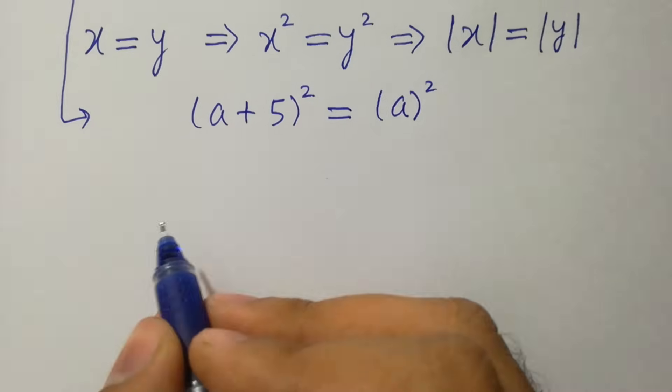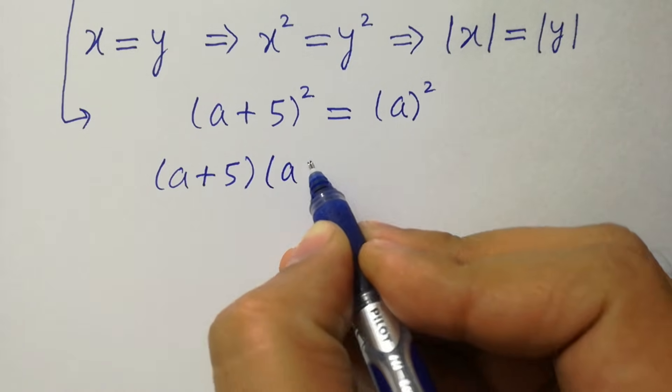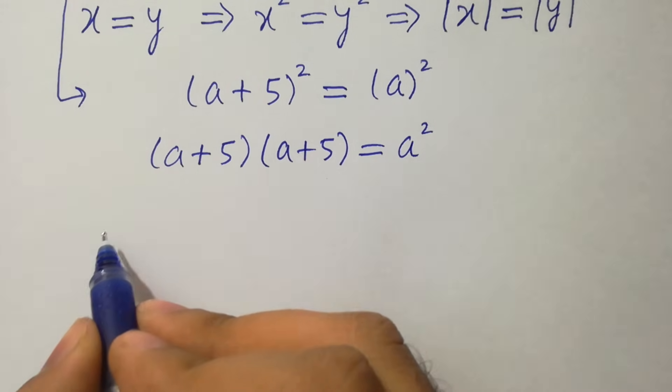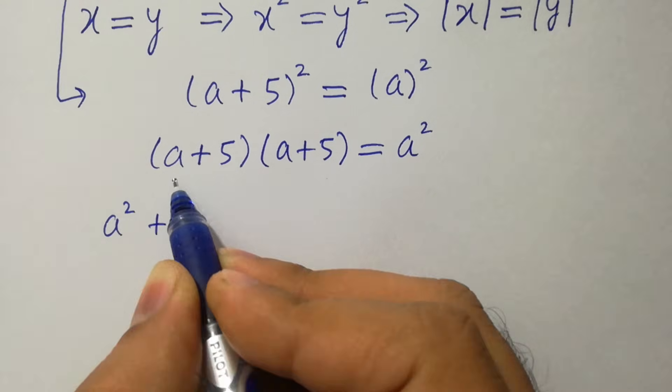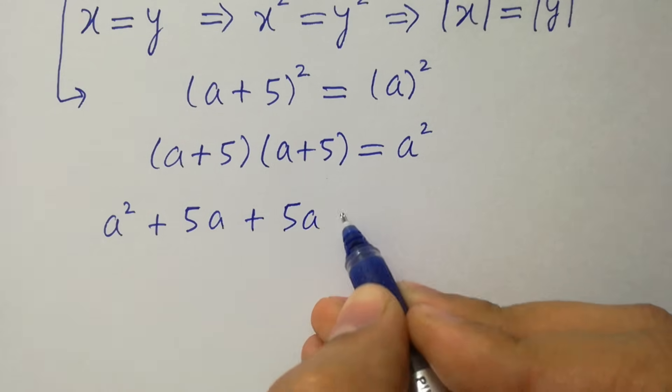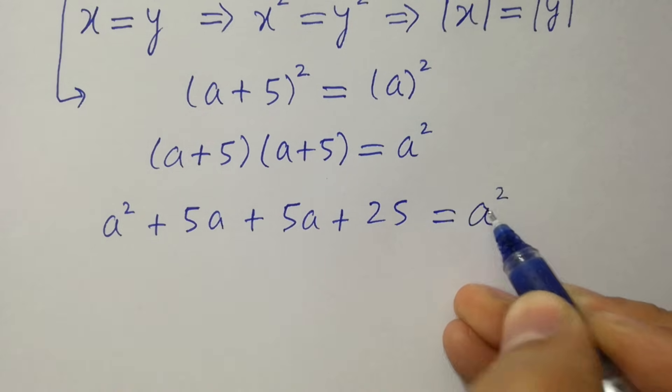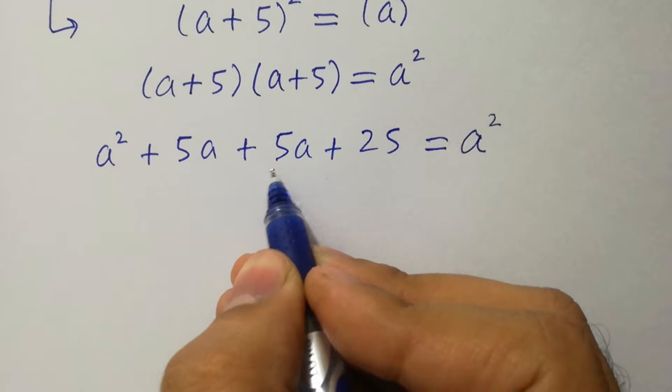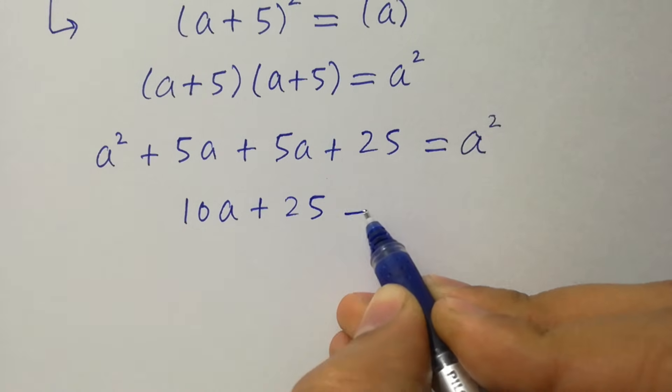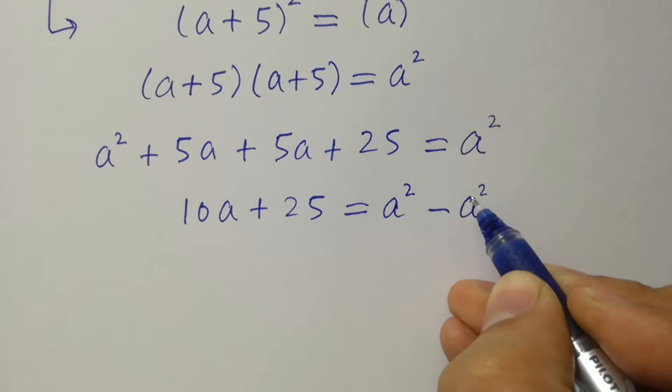So, solve this now, which is same as a plus 5 times a plus 5 equal to a square. A times a, we have here a square plus a times 5, we have 5a plus 5 times 5 is 25 equal to a square. A square cancels.